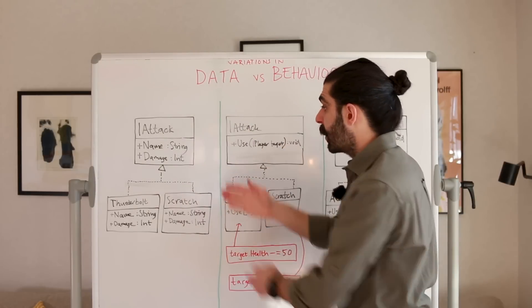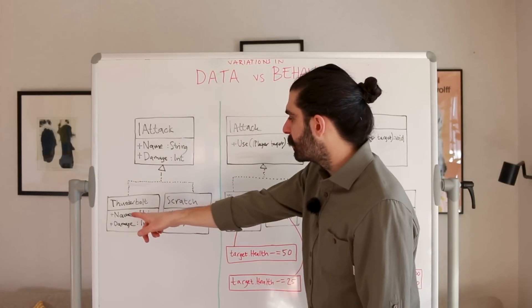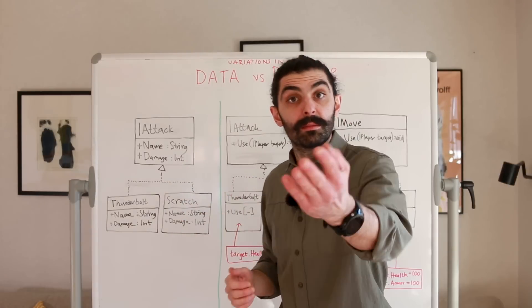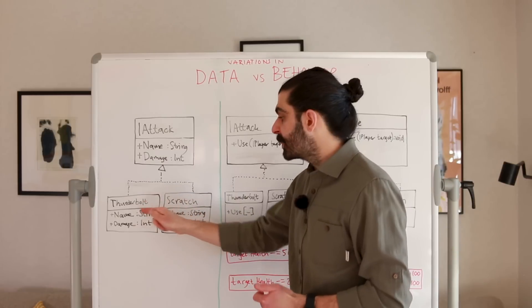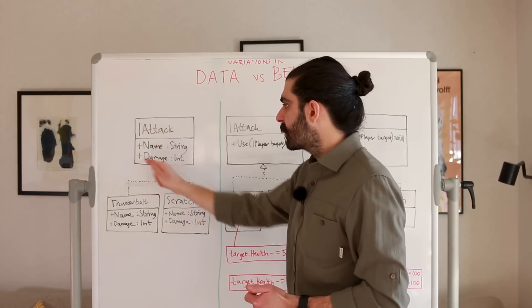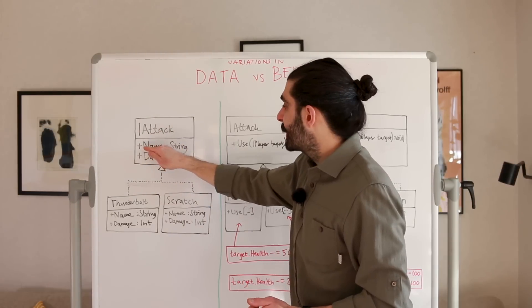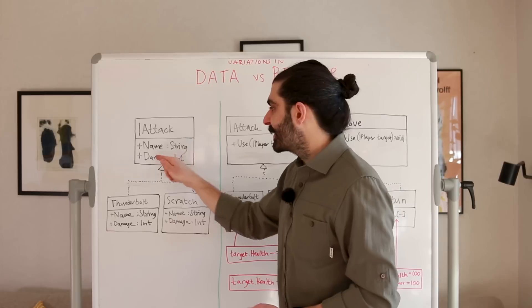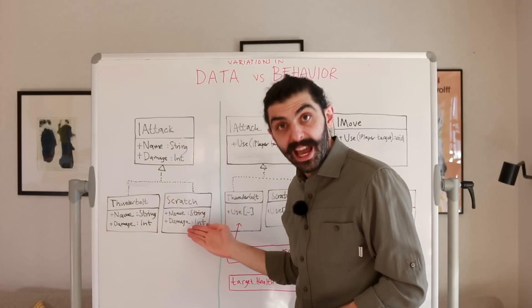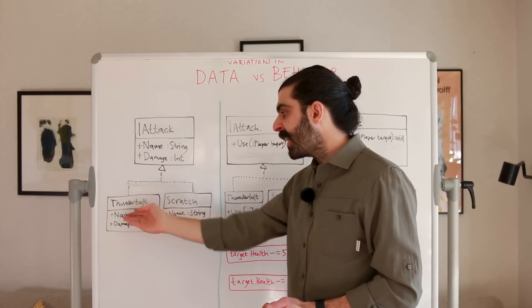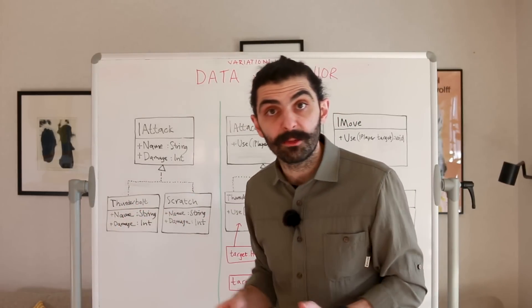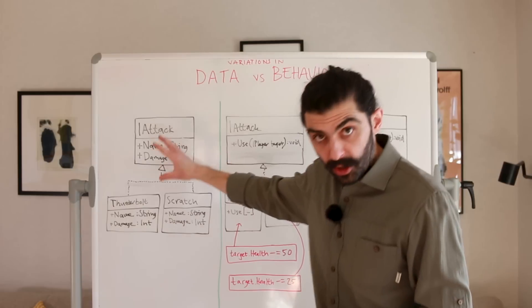Have a look at this first UML diagram. On the top we have an interface called iAttack, and on the bottom we have two subtypes: one is called Thunderbolt and one is called Scratch. You can imagine a battle system — maybe like the game Pokemon — where you have different attacks with different names and different amounts of damage. In the supertype we have one getter called name of type string, and one getter called damage of type integer. For the concrete subtypes, Thunderbolt would have name 'Thunderbolt' and damage maybe 100, and Scratch might have damage of 50. Can we, from this diagram, determine whether this is a good or bad use of polymorphism?